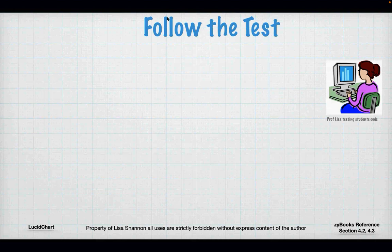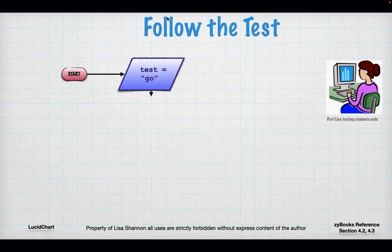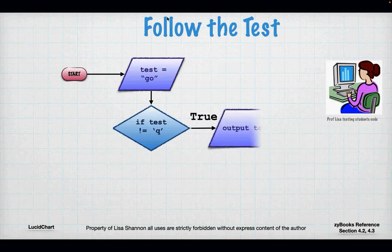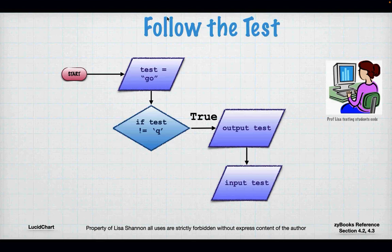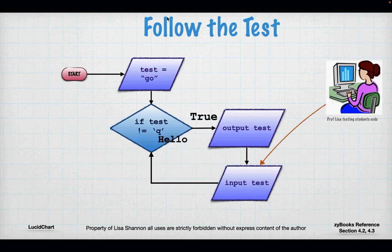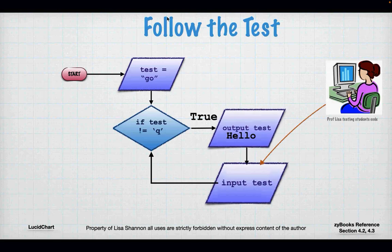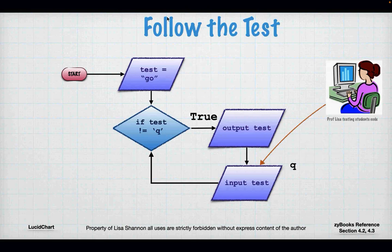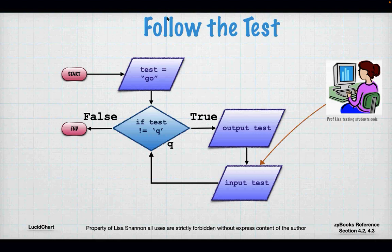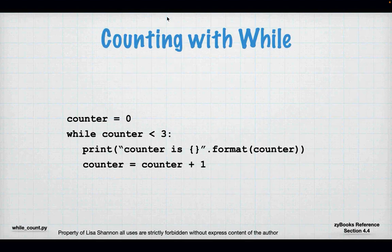Let's follow the test through the flowchart. Test is `go` — it's not Q, so it's true. I output test, then input test, and type `hello`. Hello is not Q — it evaluates to true, I output, then input again. This time I input Q. Q equals Q, so the if condition evaluates to false and I'm done.